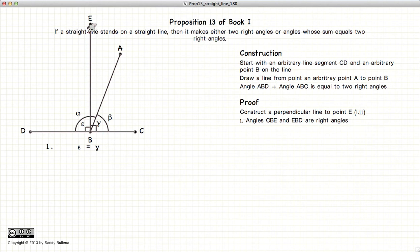Now let's label the angle EBA as theta. Now it's very clear from the diagram that gamma is equal to beta plus theta.